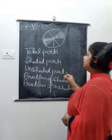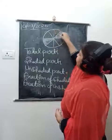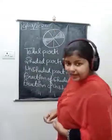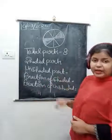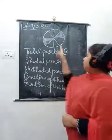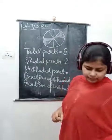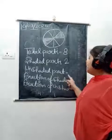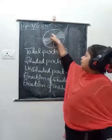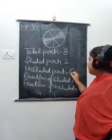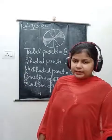Total parts: one, two, three, four, five, six, seven, eight - total parts are eight. Shaded parts: one, two - two parts are shaded. Unshaded parts: one, two, three, four, five, six - six parts are not shaded.